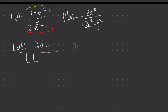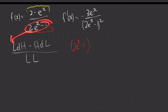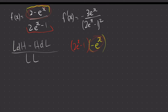So what is low? Low is simply (2e to the power of x minus 1). I copy this here. Multiplied by the derivative of the high — the derivative of (2 minus e to the power of x) is simply negative e to the power of x. The derivative of 2 is zero, minus the derivative of e to the power of x is just e to the power of x, so that gives negative e to the power of x.